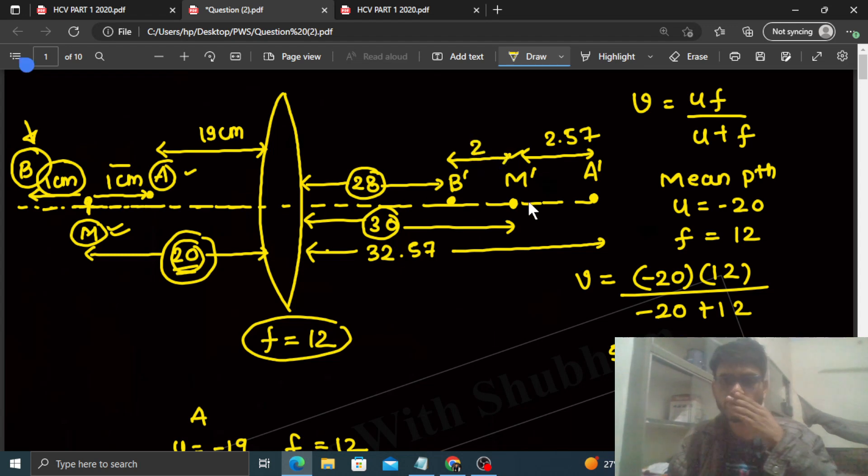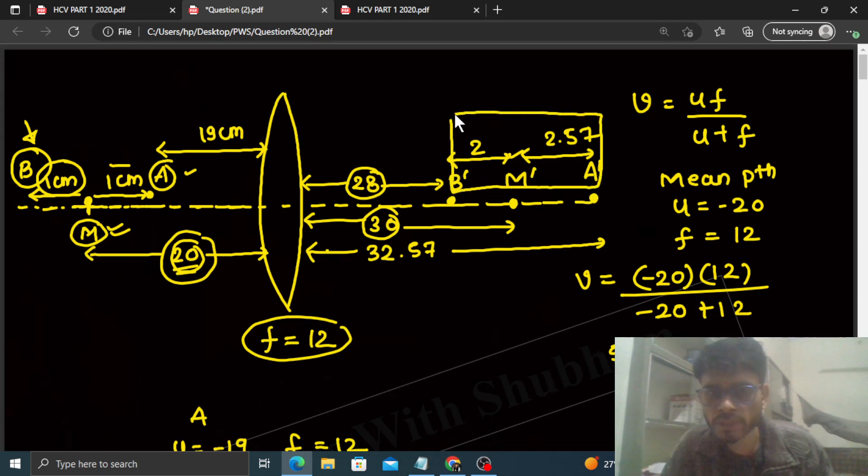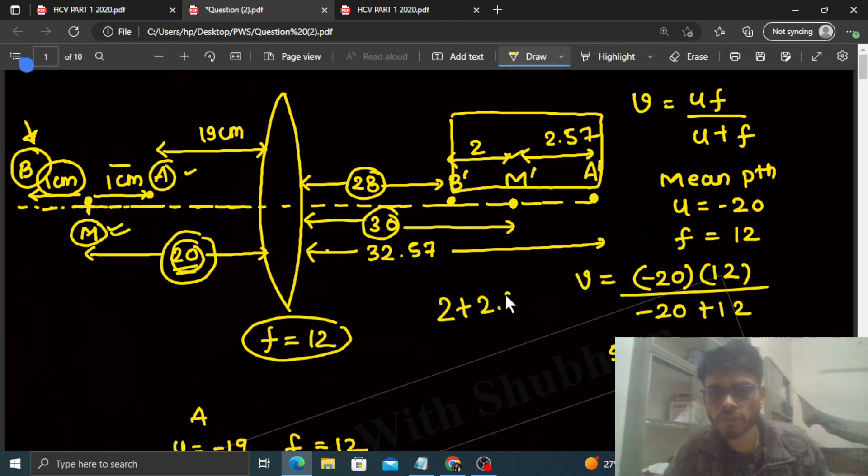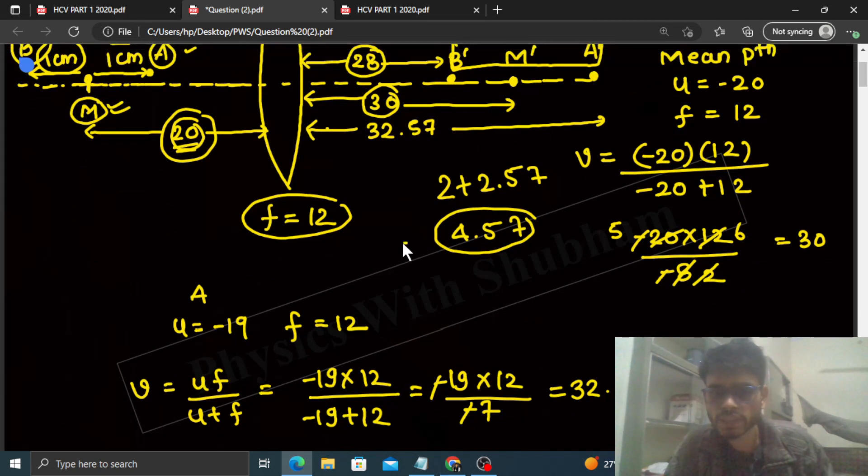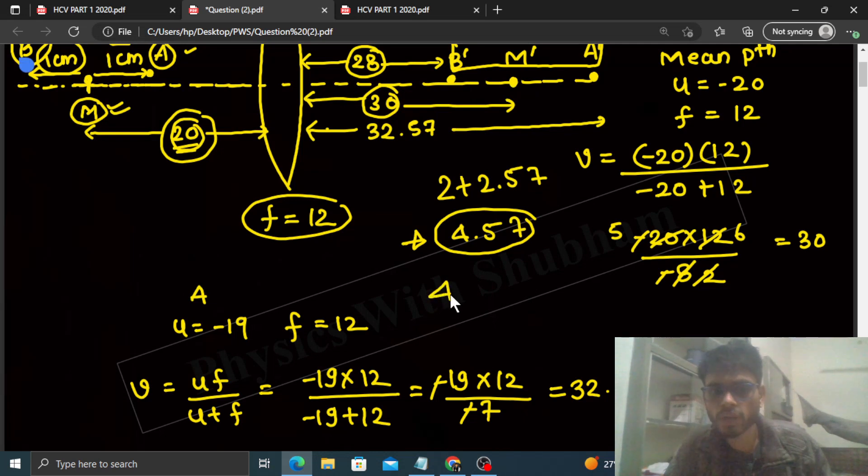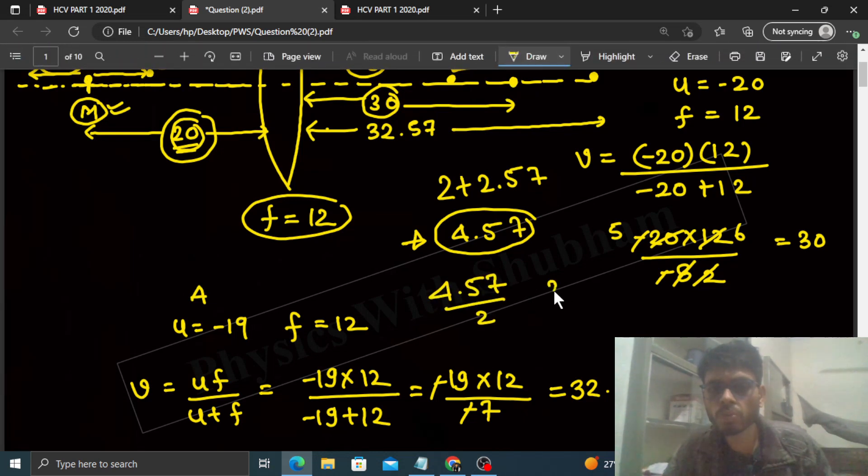So if we say what will be the amplitude of oscillation of the image? You can see the distance between the extreme positions - the distance between A dash and B dash is 2 plus 2.57, that is basically 4.57. This is the distance between the two extremes. The distance between extreme positions, half of that is the amplitude. So half this distance, the answer will be 4.57 divided by 2: 2.28 centimeter or something like that.